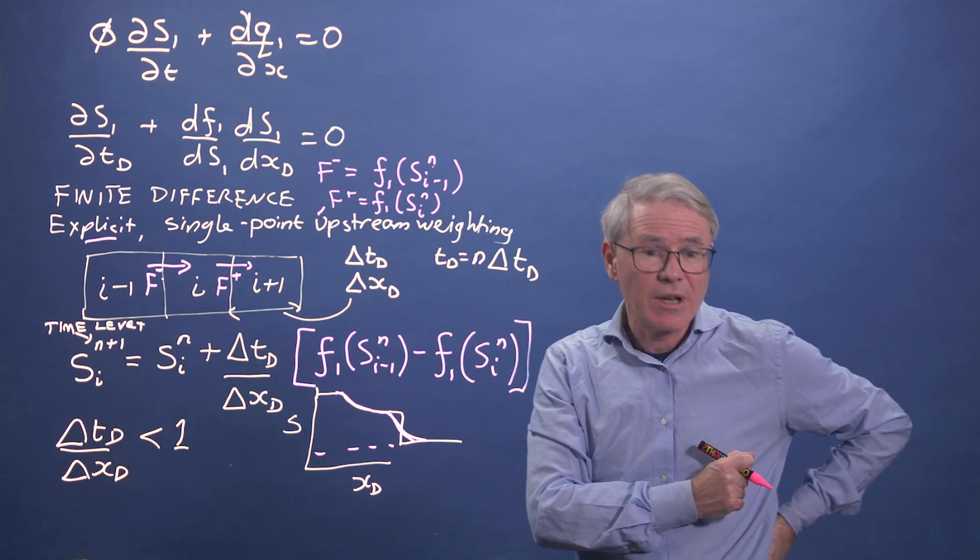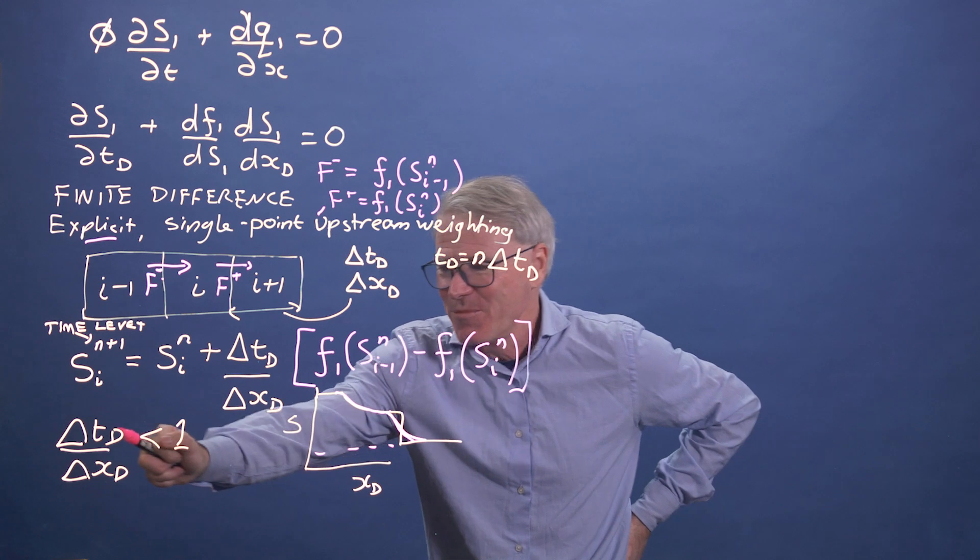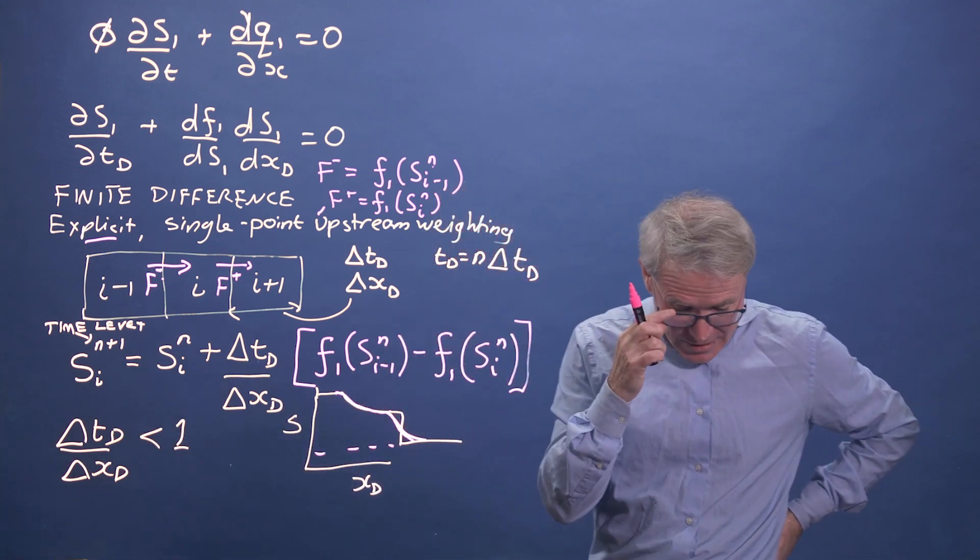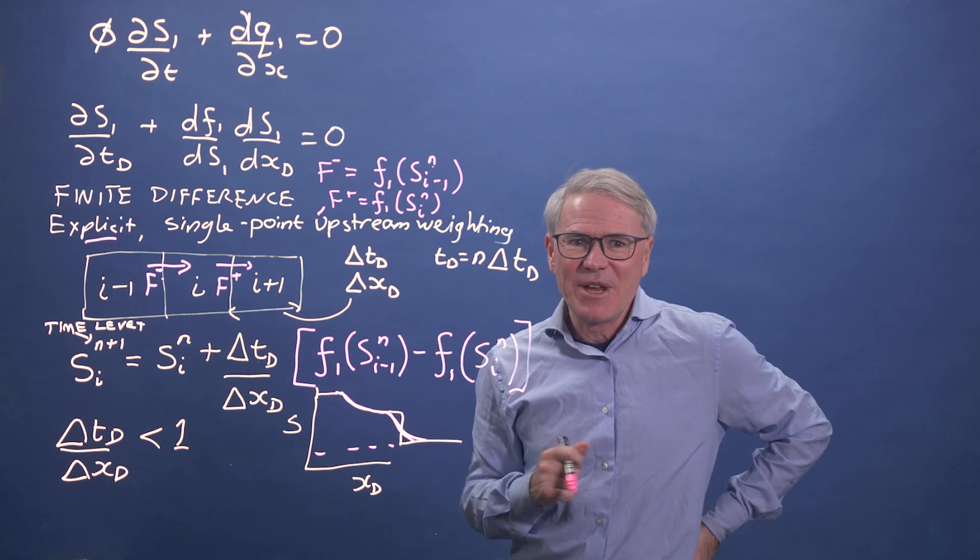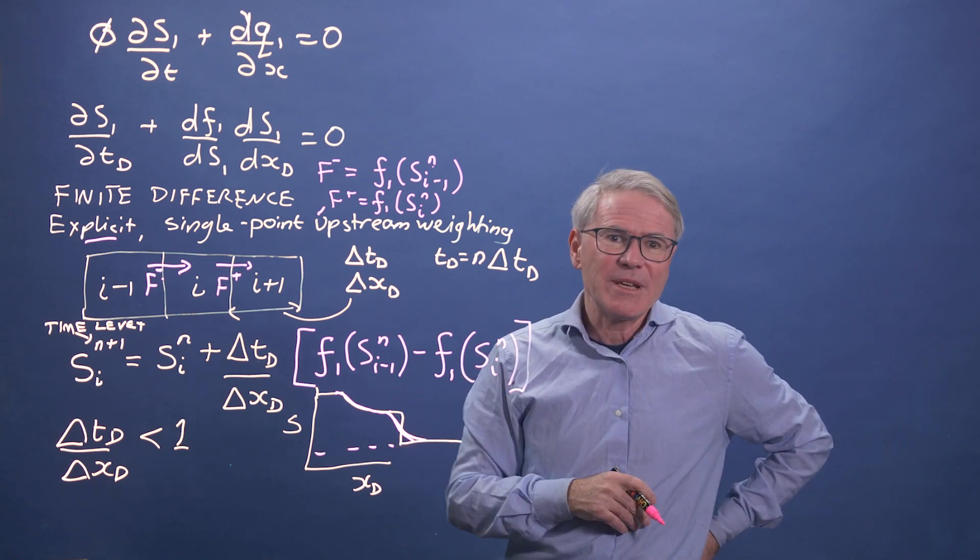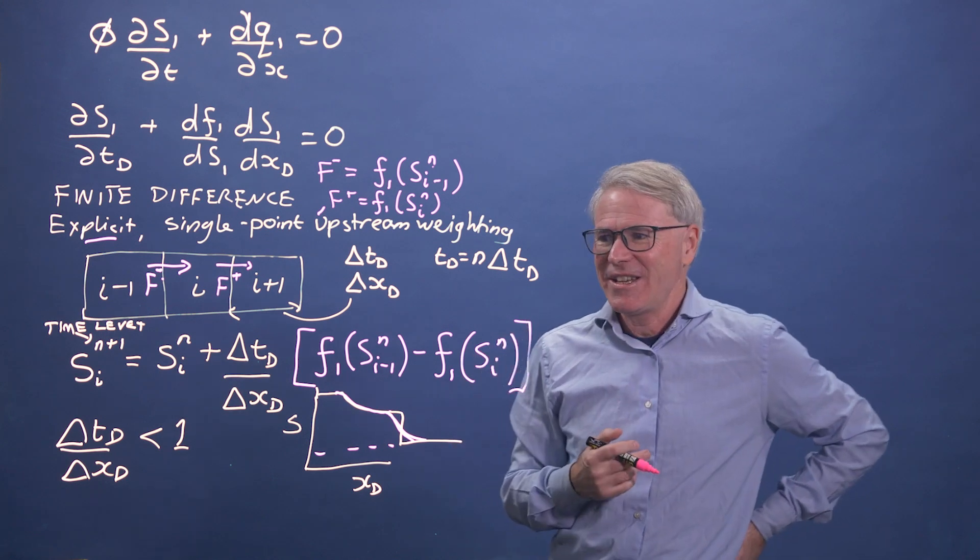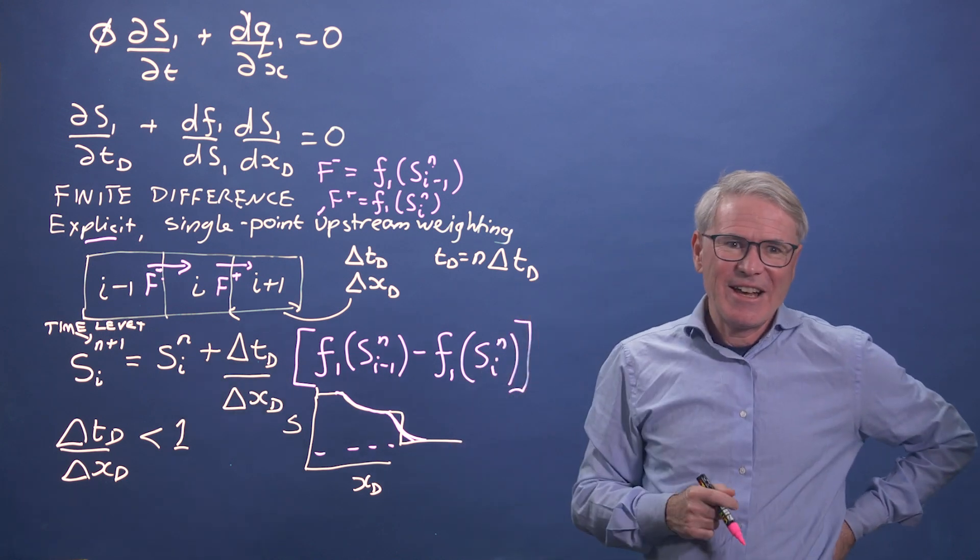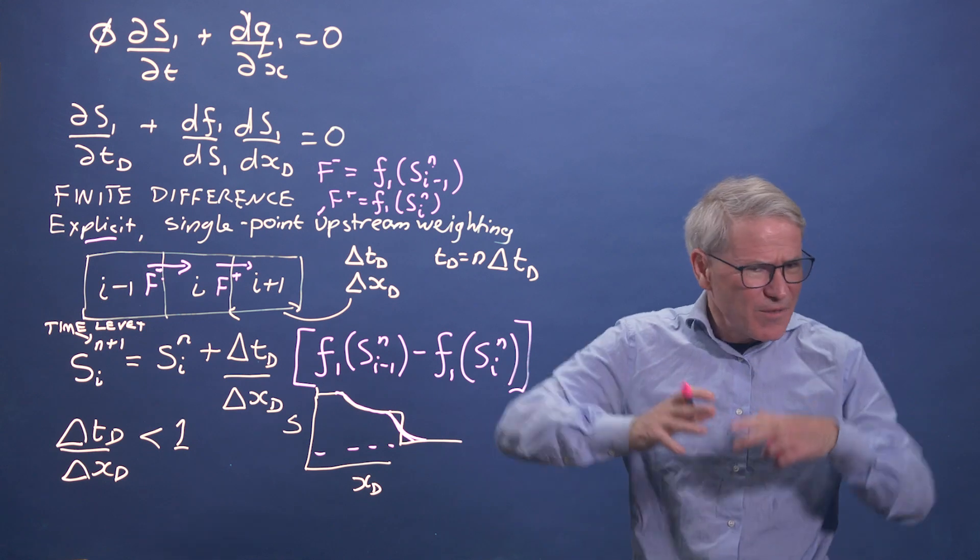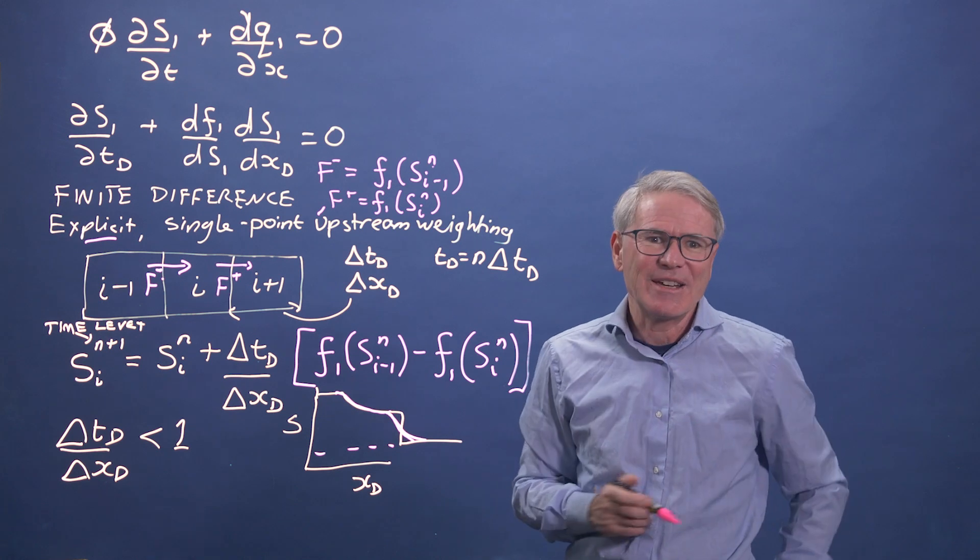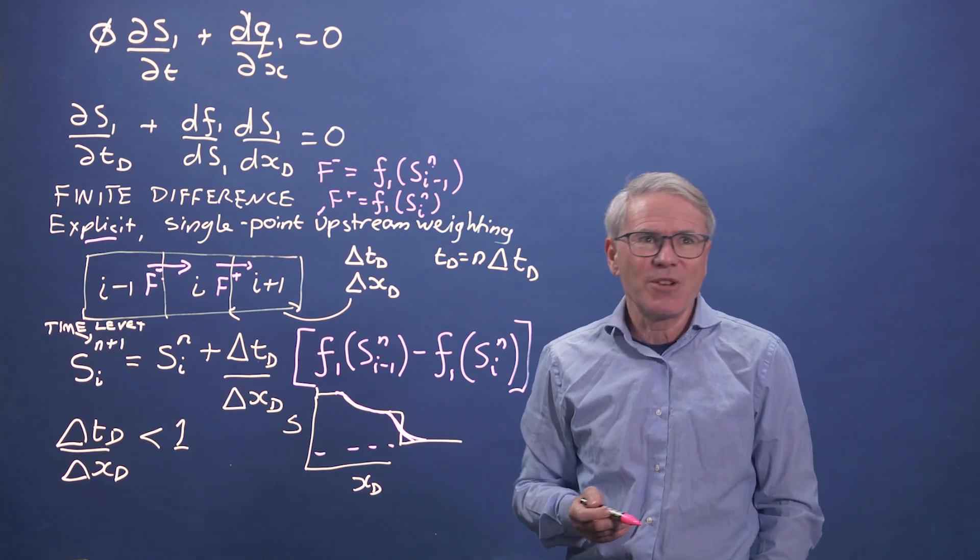although in principle will work, requires very small time steps, very fine spatial discretization. So the way in which you deal with the imbibition problem is to find this fractional flow and then you differentiate it and that finds the scaling as x over root t.